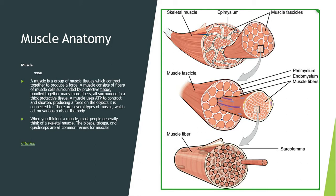Muscular anatomy: a muscle is a group of muscle tissues which contract together to produce a force. Muscles consist of many fibers surrounded by protective tissue, all bundled together. This contraction occurs and you get a much shorter muscle, and then a lengthening occurs and you get a much longer muscle.